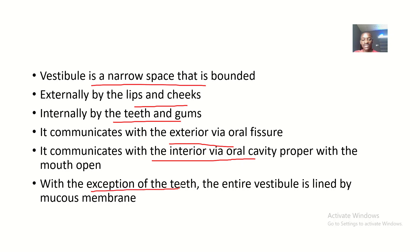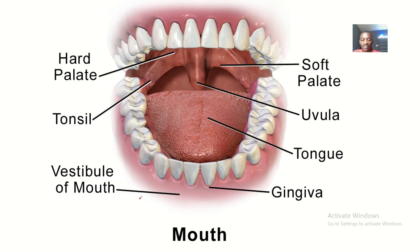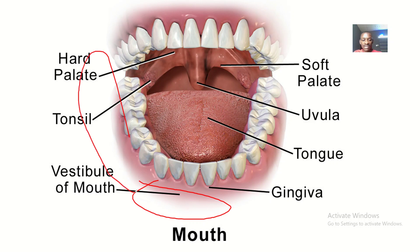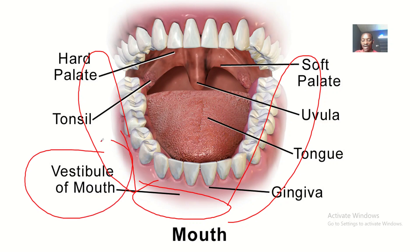With the exception of the teeth, the entire vestibule is lined by mucous membrane. If you minus the teeth from the mouth, then everything in the vestibule is lined by mucous membrane. This piece just outside your teeth is actually what we call the vestibule of the mouth, or the oral vestibule.